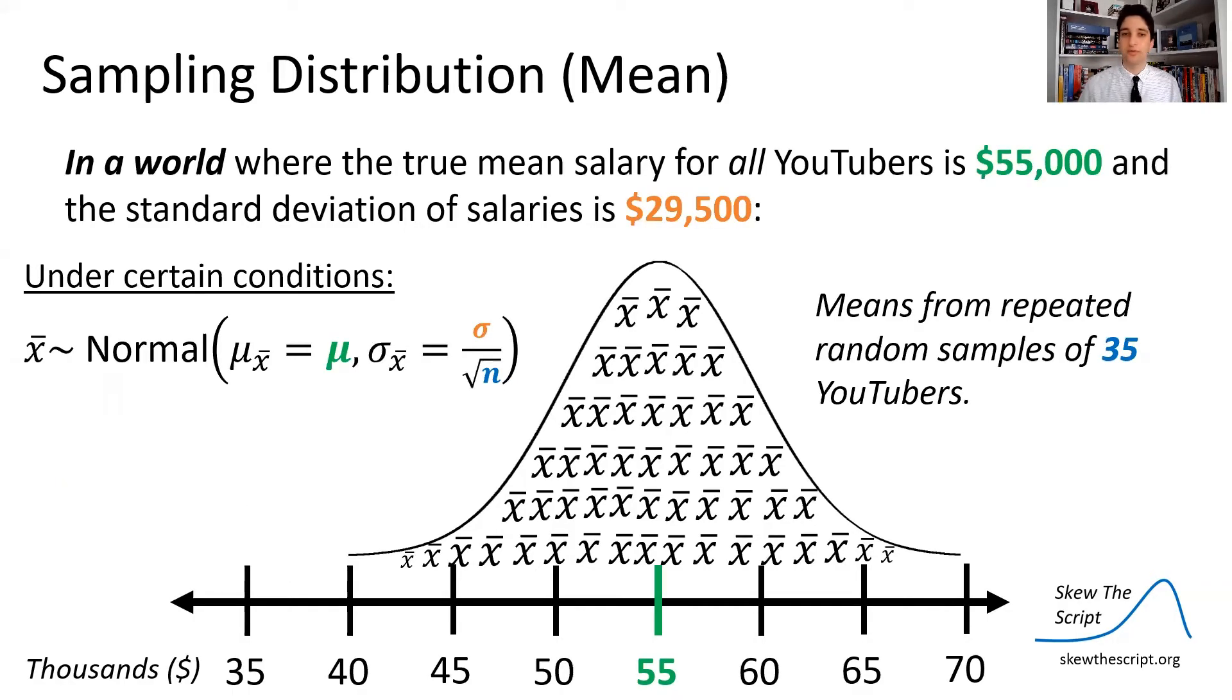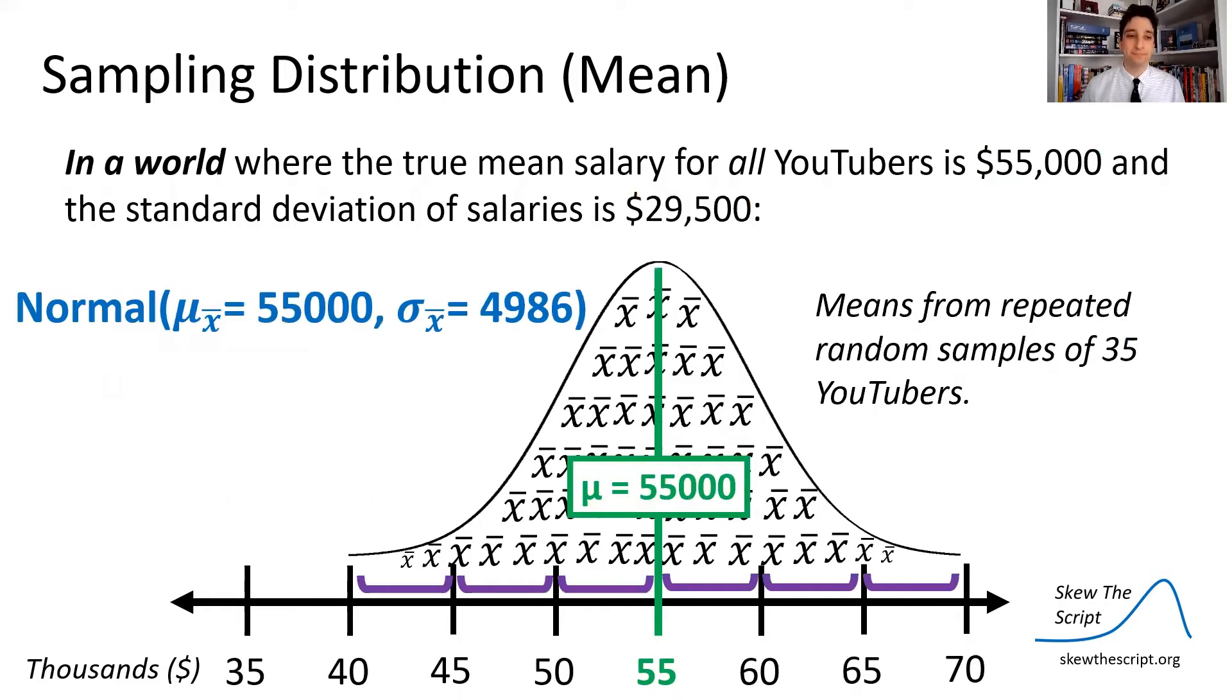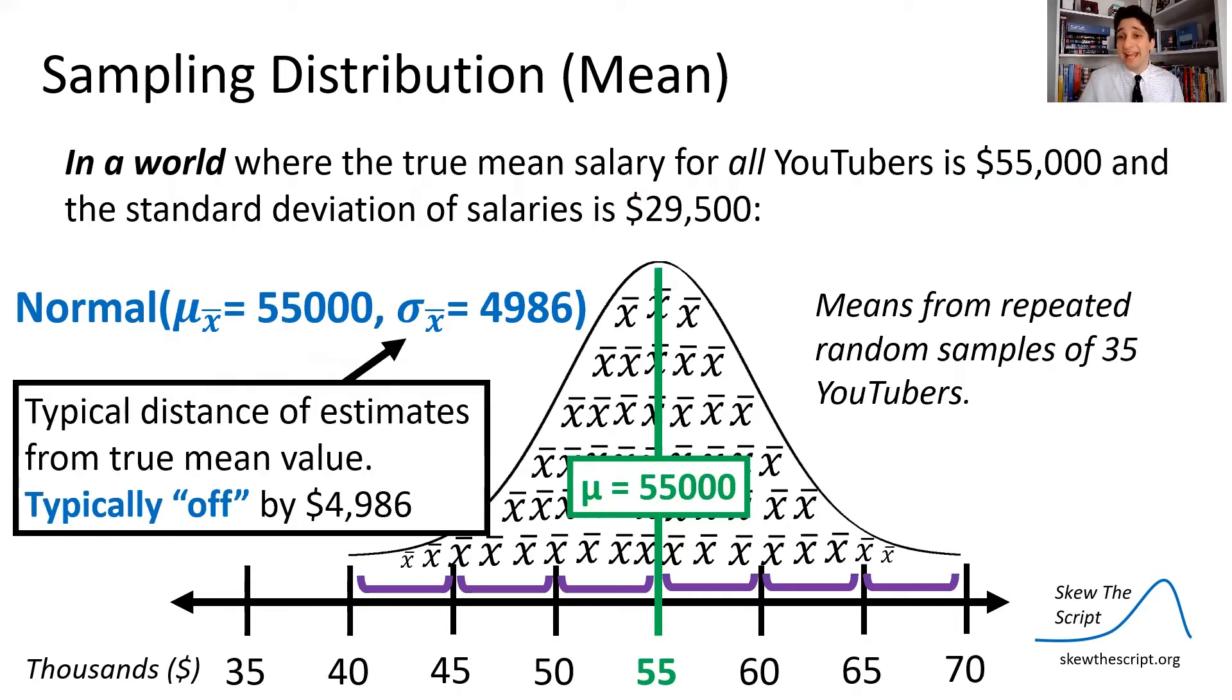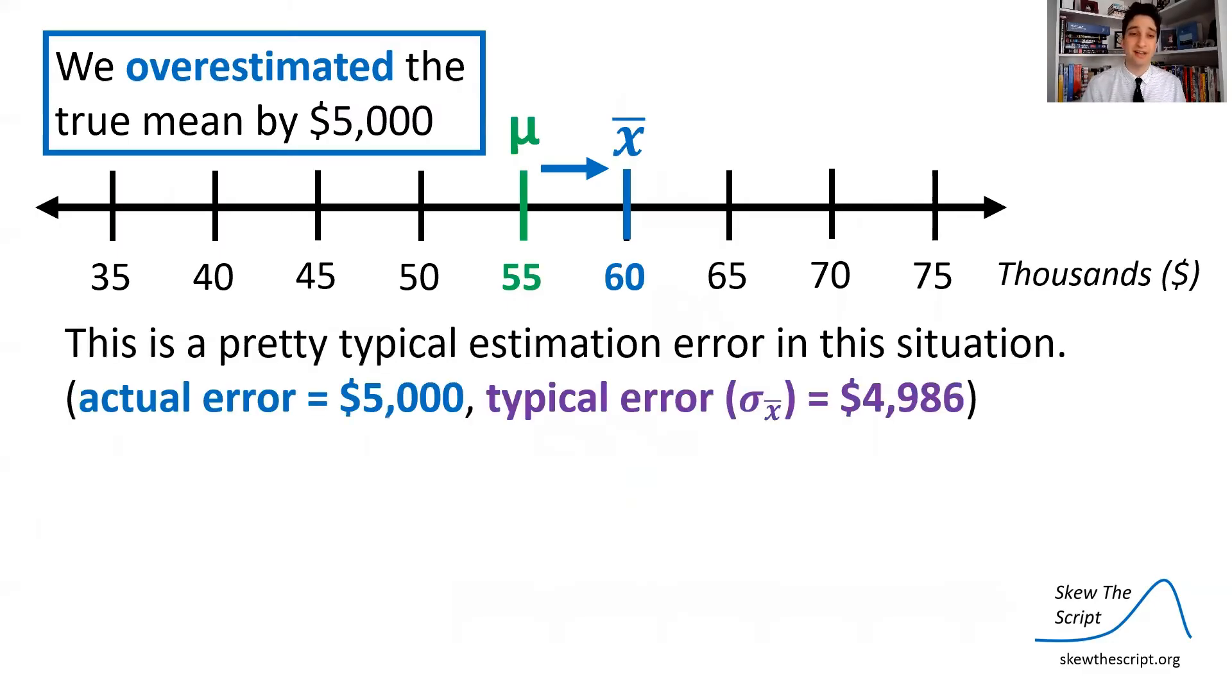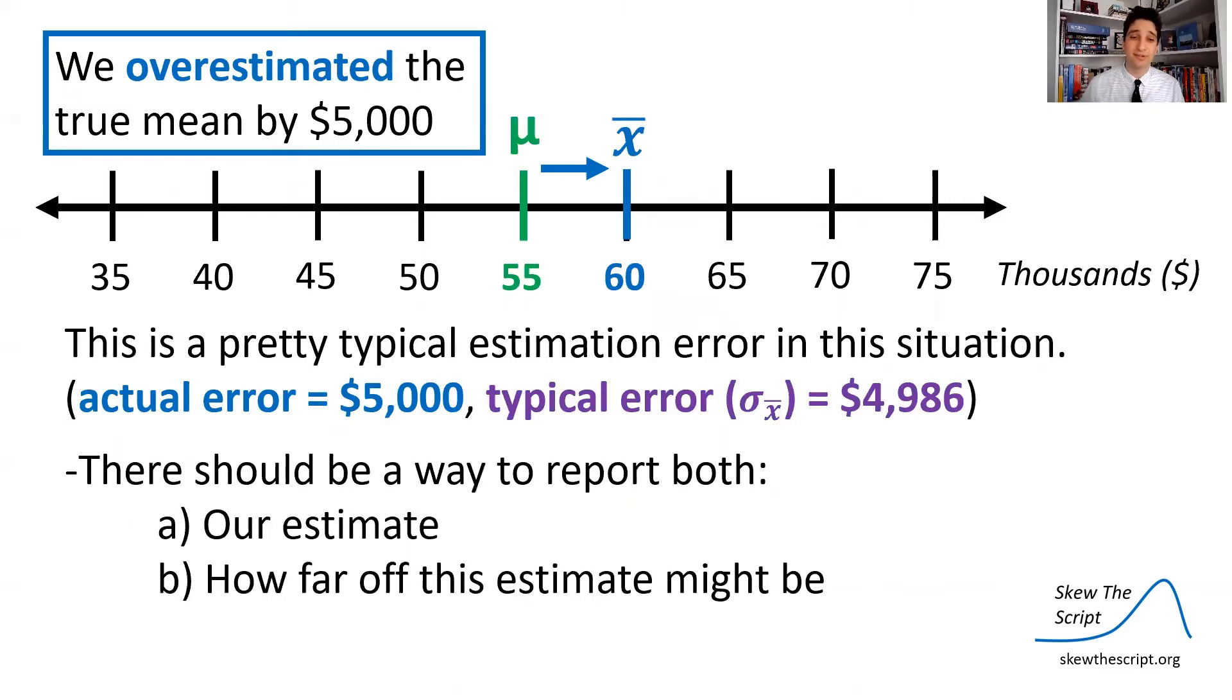This is the typical distance of our sample means from the true mean. And we can plug in what we know. So in this theoretical world, we know the exact true mean salary. We know the exact standard deviation. We can plug those numbers in. And when we do the math, we can see that we're centered at $55,000 with a standard deviation of our sampling distribution of 4,986. So we're going to be centered at 55,000 with about 5,000 in deviation. So that means that when we get a sample, we're going to be typically off by just shy of $5,000. So our typical estimates for the true mean are going to be off by about 5,000 usually. So in this case, we overestimated the true mean by 5,000. Going back to our other example, we got a sample mean of $60,000. And now that we know the sampling distribution, we can see this is a pretty typical error. The actual error is $5,000 and the typical error measured by that standard deviation is 4,986. So this is pretty typical.